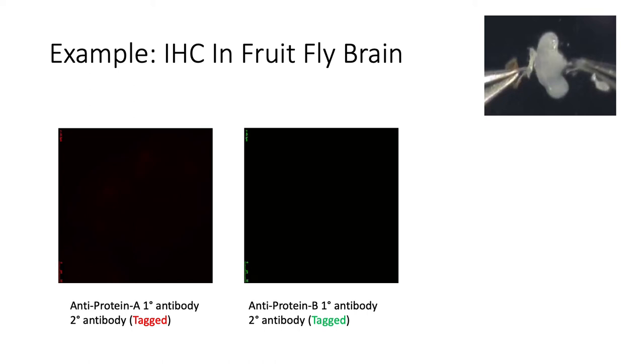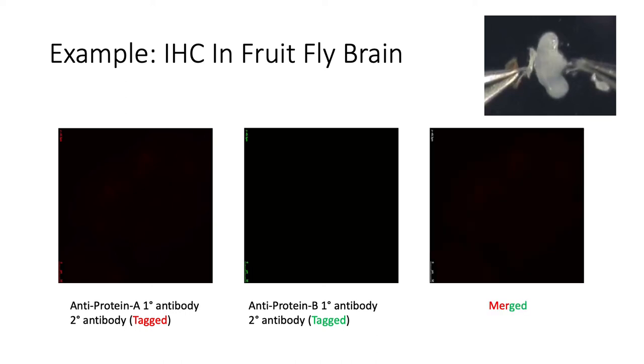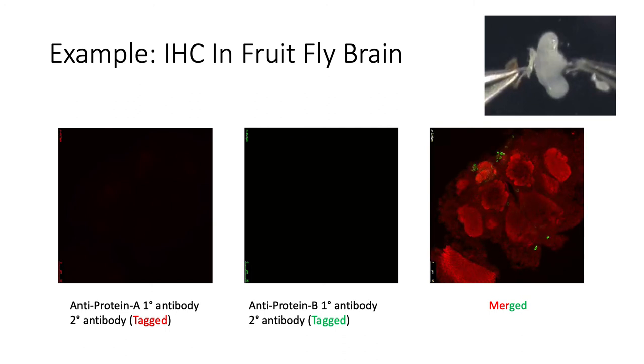Now that we have created an atlas of the different brain regions by labeling against protein A with the red fluorophore, and that we have also labeled the cells expressing the protein of interest, protein B, by using the green fluorophore, we can merge these two images, getting a very accurate image showing the specific localization of cells that express protein B throughout the fly brain.